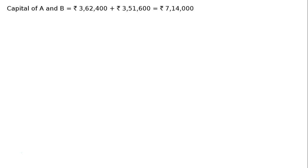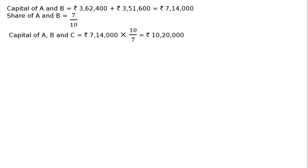Capital contribution by C: C contributes proportionate capital and 60% of her share of goodwill in cash. Capital of A and B: new capital balance of A is Rs. 3,62,400 and capital balance of B is Rs. 3,51,600, totalling Rs. 7,14,000. Total capital of A, B, and C equals Rs. 7,14,000 multiplied by 10/7, that is Rs. 10,20,000.